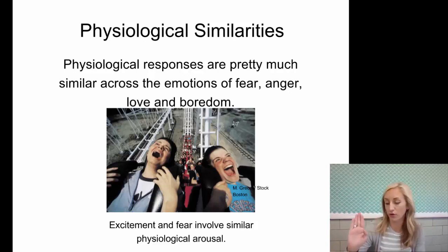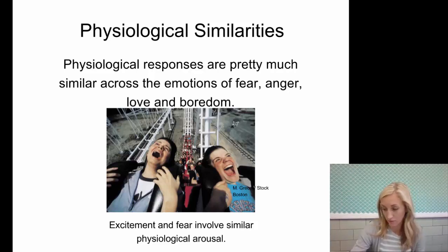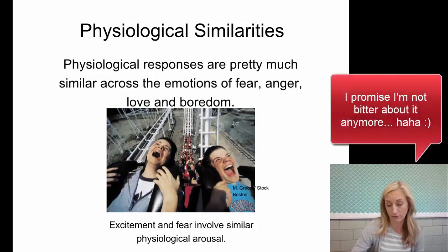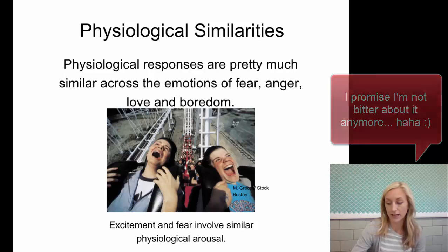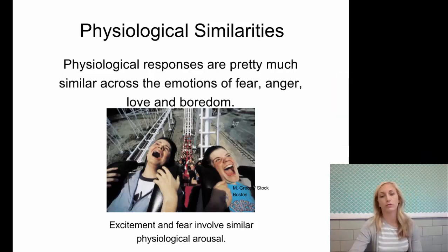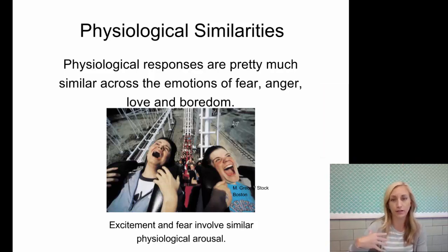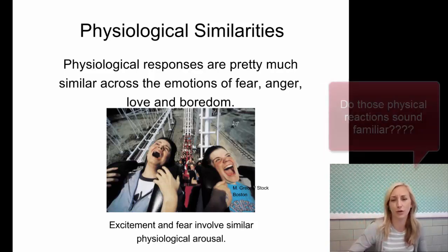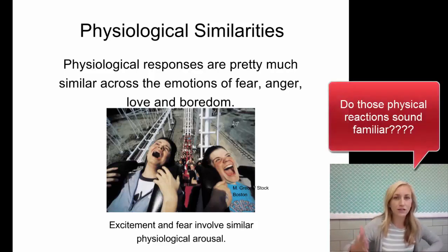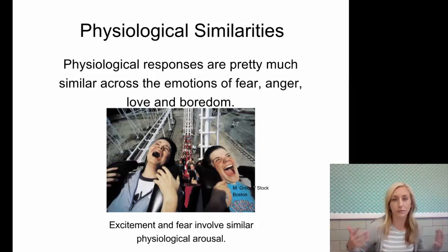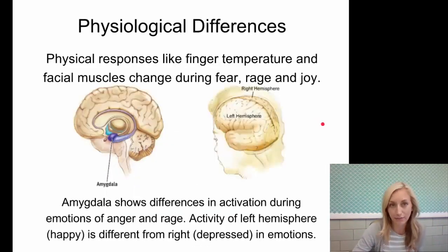Now let's say your sibling does whatever pushes your buttons — borrows your clothes without asking and ruins them, or just gets on your nerves. You're super mad. Your heart rate's increasing, your breathing's increasing, you're sweating, maybe a little shaky because you're so mad. The physical responses to anger and fear — or even excitement and fear — are incredibly similar. So according to some theorists, you have to have the cognitive label.